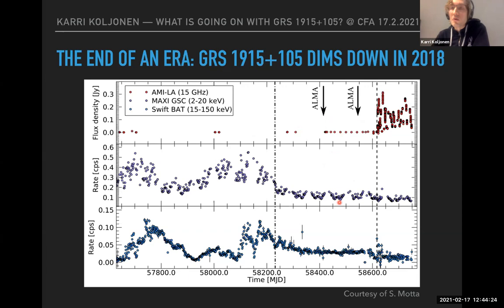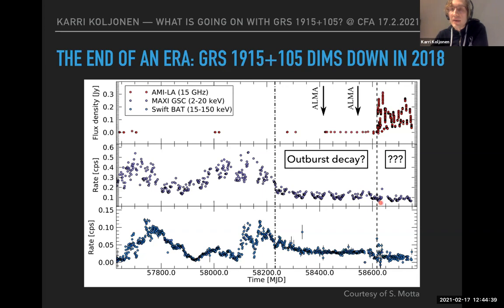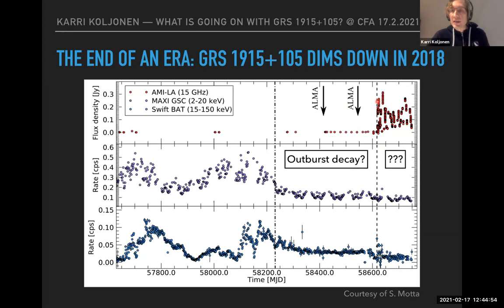We are also getting lower X-ray emission than ever seen before. Then after the X-ray flux dropped further from about 4 percent to 1 percent Eddington, we see radio flaring again — radio flux up to 0.3 Janskys. This raises the question: what is going on? Is the outburst decaying or not, or did the source turn back on?